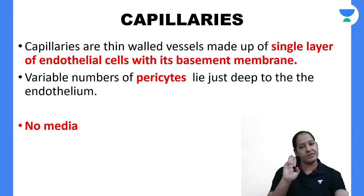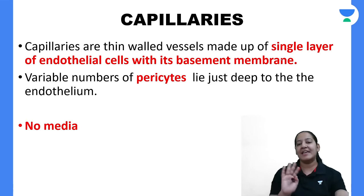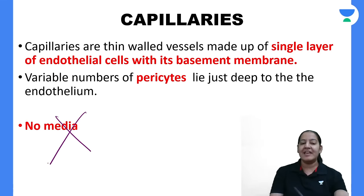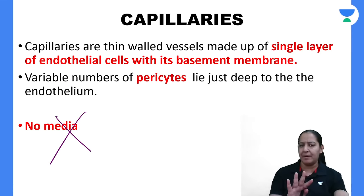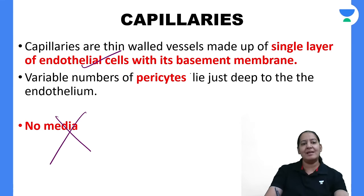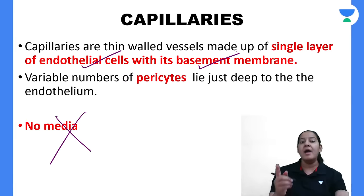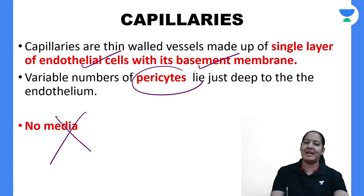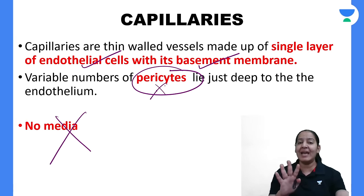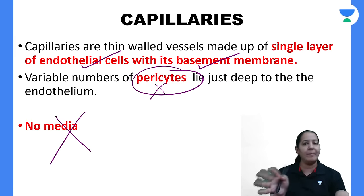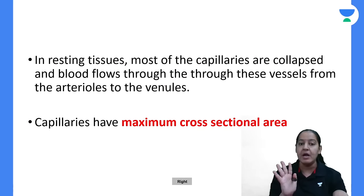The third type is the capillary. Capillaries do not have media — they have only intima, consisting of endothelial cells on a basement membrane, with occasional pericytes in the externa. Capillaries are of three types: continuous capillary, fenestrated capillary, and sinusoidal capillary. Continuous capillaries have no gaps in either the endothelium or the basement membrane.